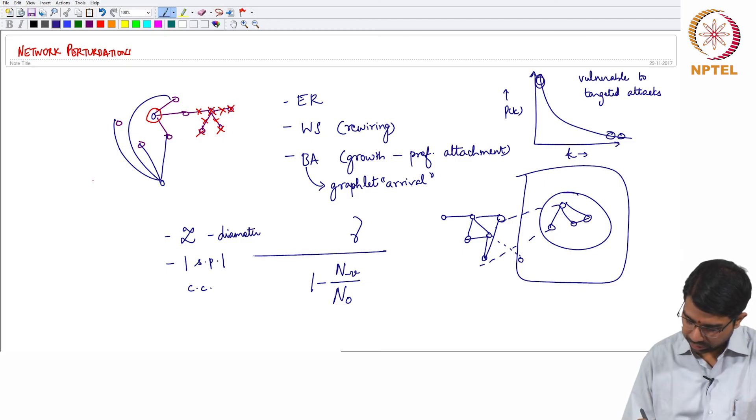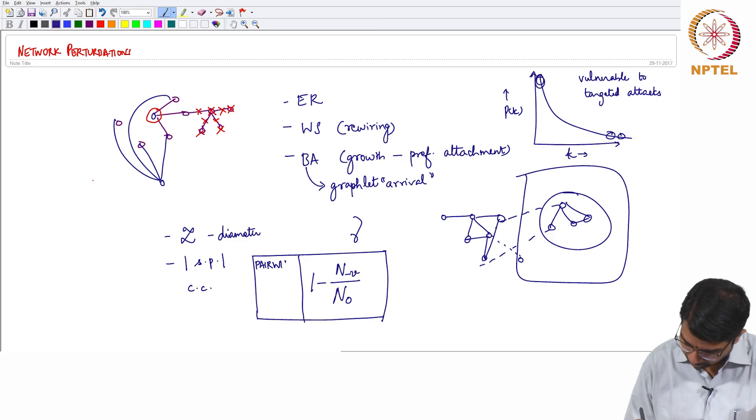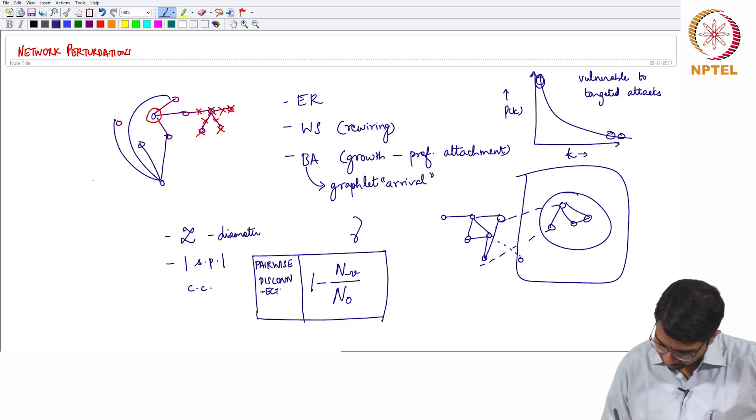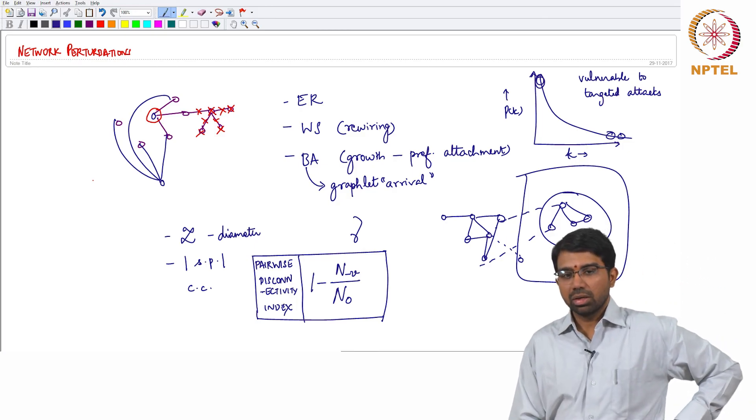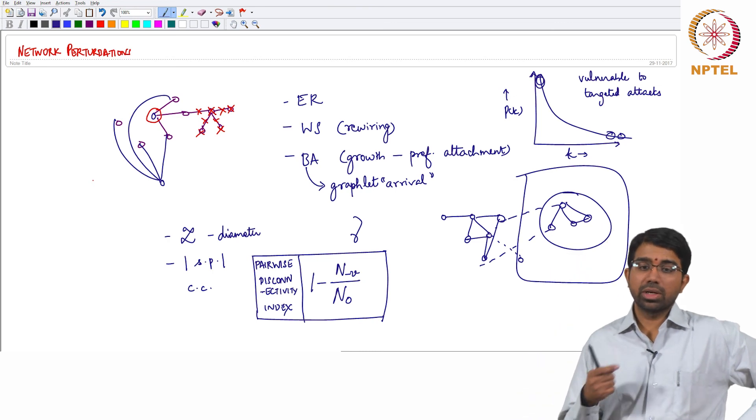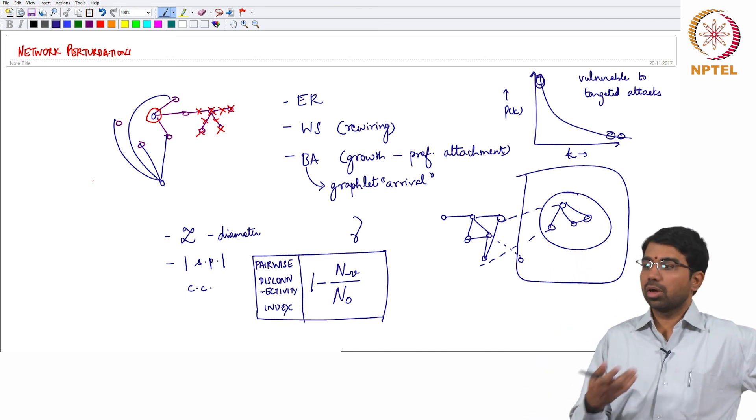So this is the metric called pairwise disconnectivity index. You can come up with your own metric for trying to understand how a network disintegrates on the removal of nodes.